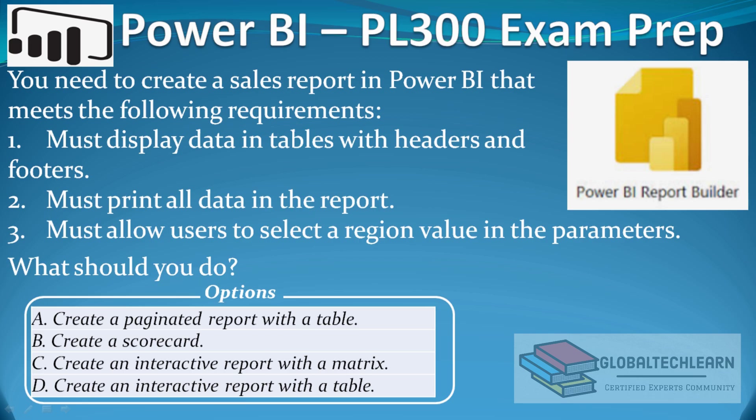What should you do? There are four options. The first option is create a paginated report with a table. The second option is create a scorecard. The third option is create an interactive report with a matrix. And the fourth option is create an interactive report with a table.